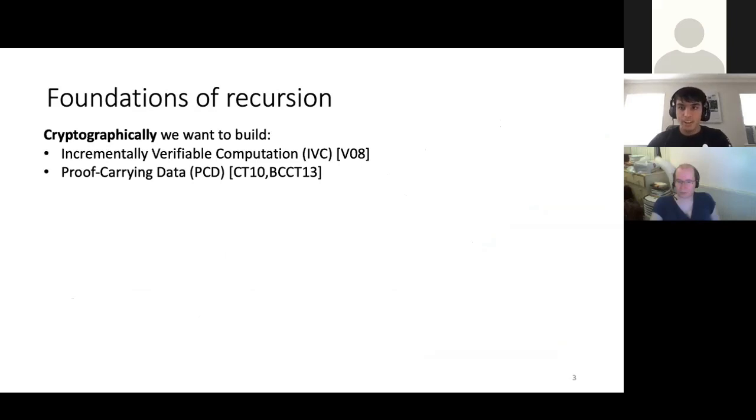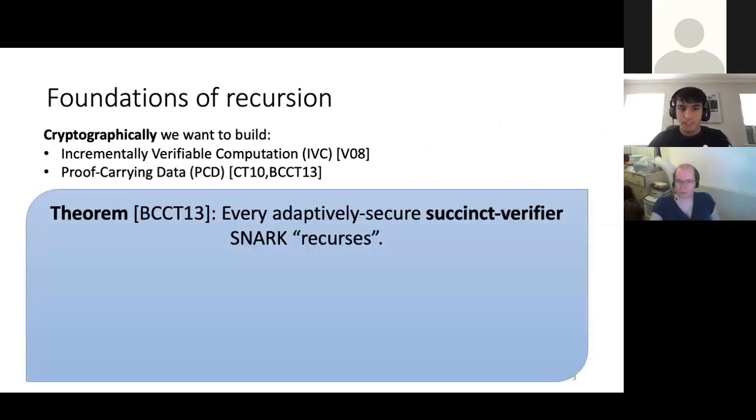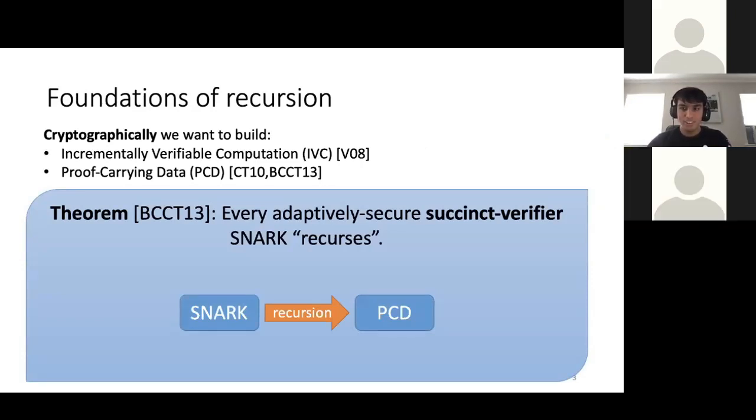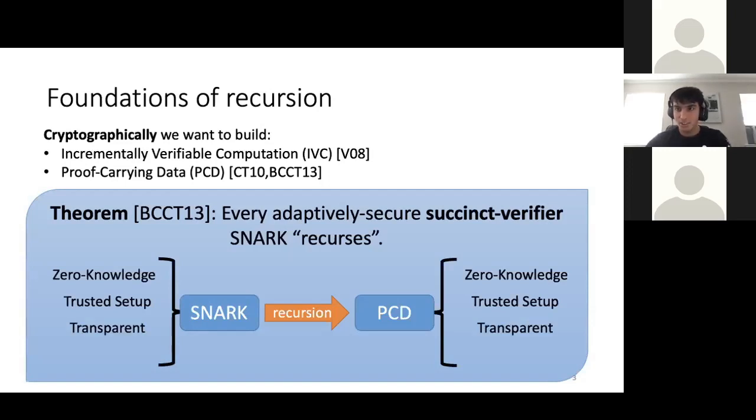And so when can you recurse a snark? Well, there's this theorem from a couple years ago that every adaptively secure, succinct verifier snark recurses. So you take a snark, you recurse it, and you'll get proof carrying data. And moreover, this compilation procedure preserves many nice properties. So a zero-knowledge snark uses your knowledge PCD. Recursion sort of preserves your trusted setup type. It doesn't introduce anything new. So if you have a circuit-specific setup, your PCD will still be circuit-specific. You have an updatable trusted setup, your PCD will still have an updatable trusted setup. And if you have a transparent snark, you'll get a transparent PCD system. But what about being post-quantum? BCCT says nothing about this.